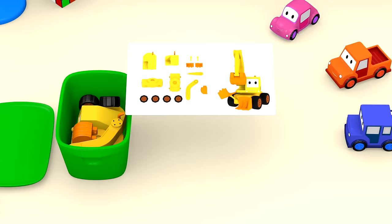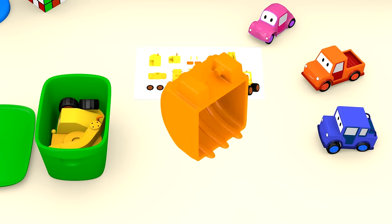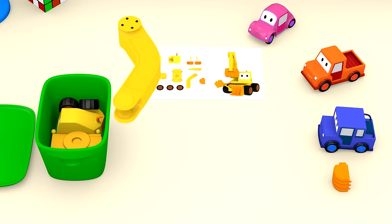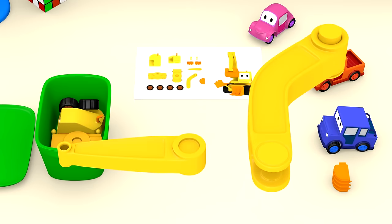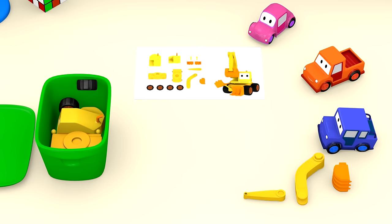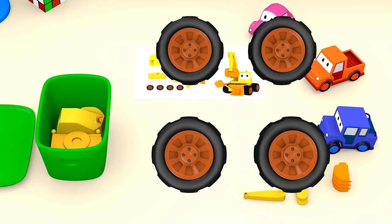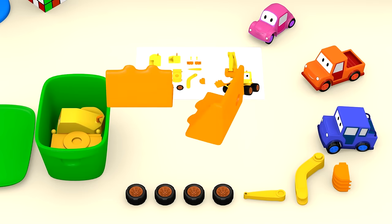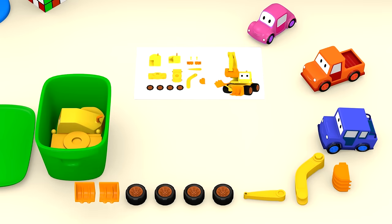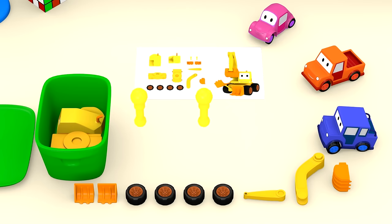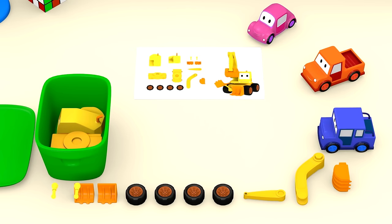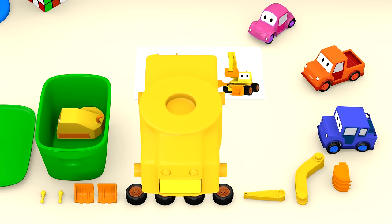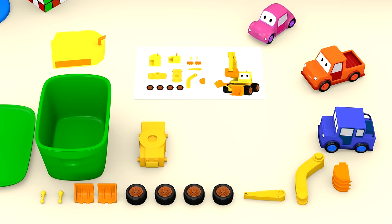First, let's take out the instructions. A shovel bucket. The two parts of the arm. Four wheels. The front shovel. The chassis. And a cabin.